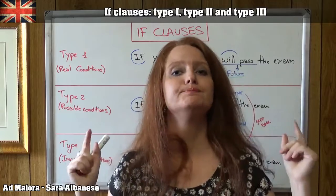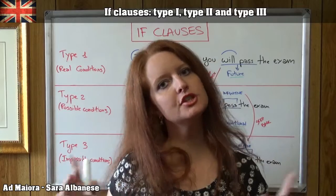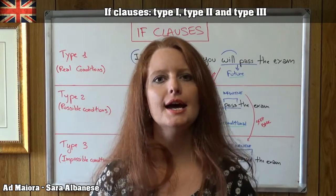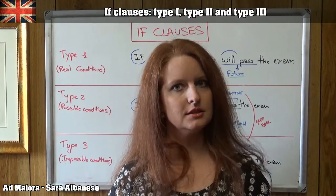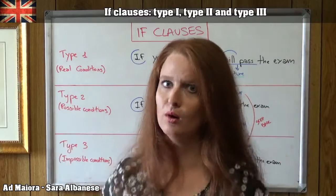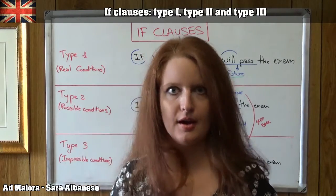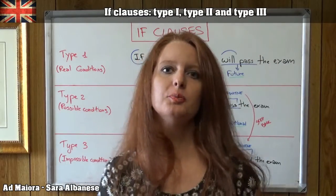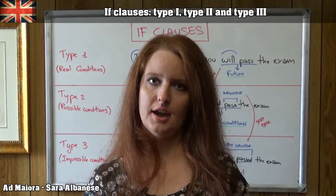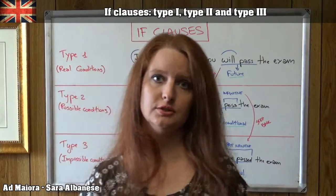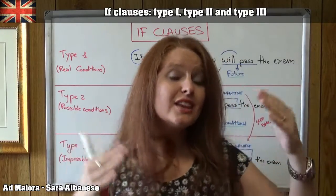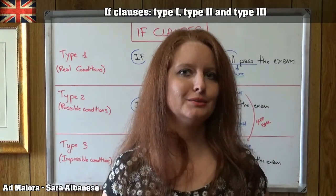Can we mix the different types together? Sometimes we can. Imagine you're having your exam now and I'm your teacher. I say: 'If you had studied' — Type 3, past perfect, impossible condition, you haven't studied — 'you would know the answer now' — Type 2, present conditional. I used a Type 3 if-clause with a Type 2 main clause. I could also say 'you could answer now,' using a modal verb. So there can be mixed forms, though they are a little more difficult.